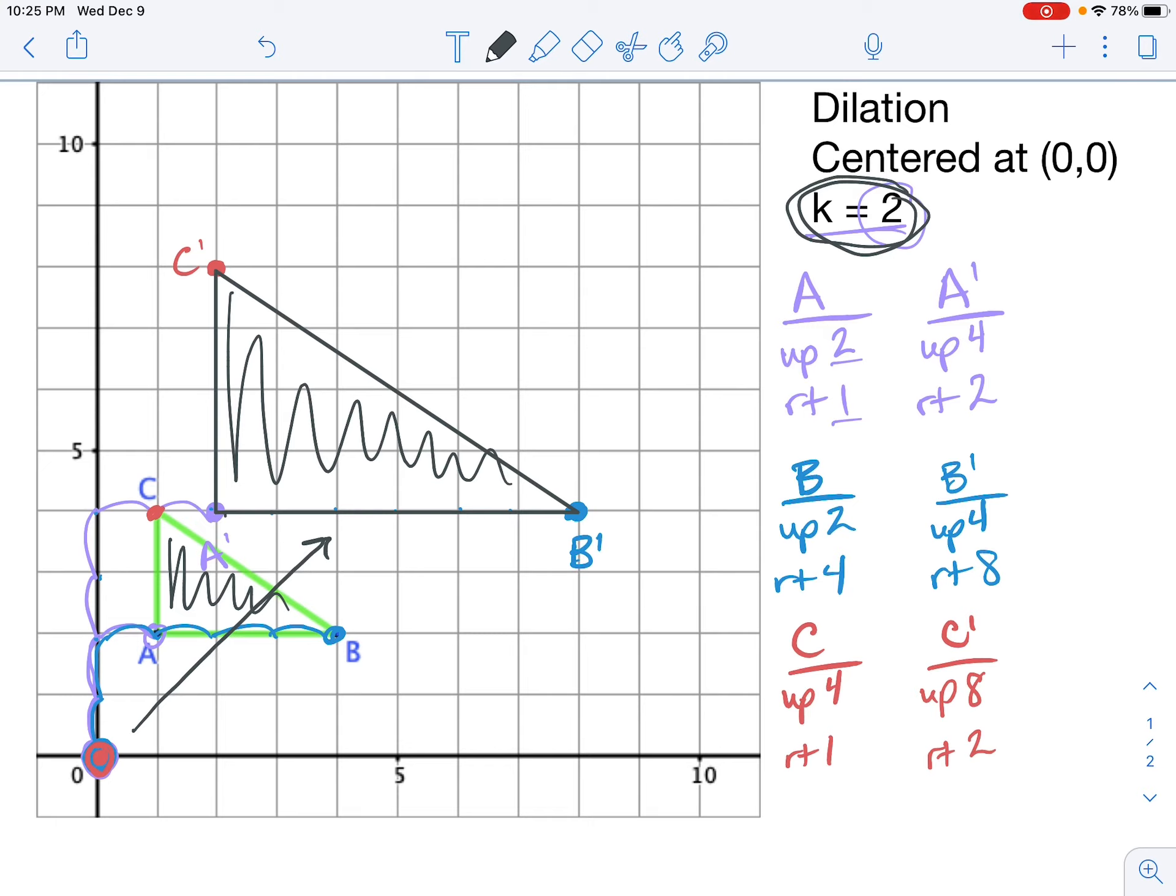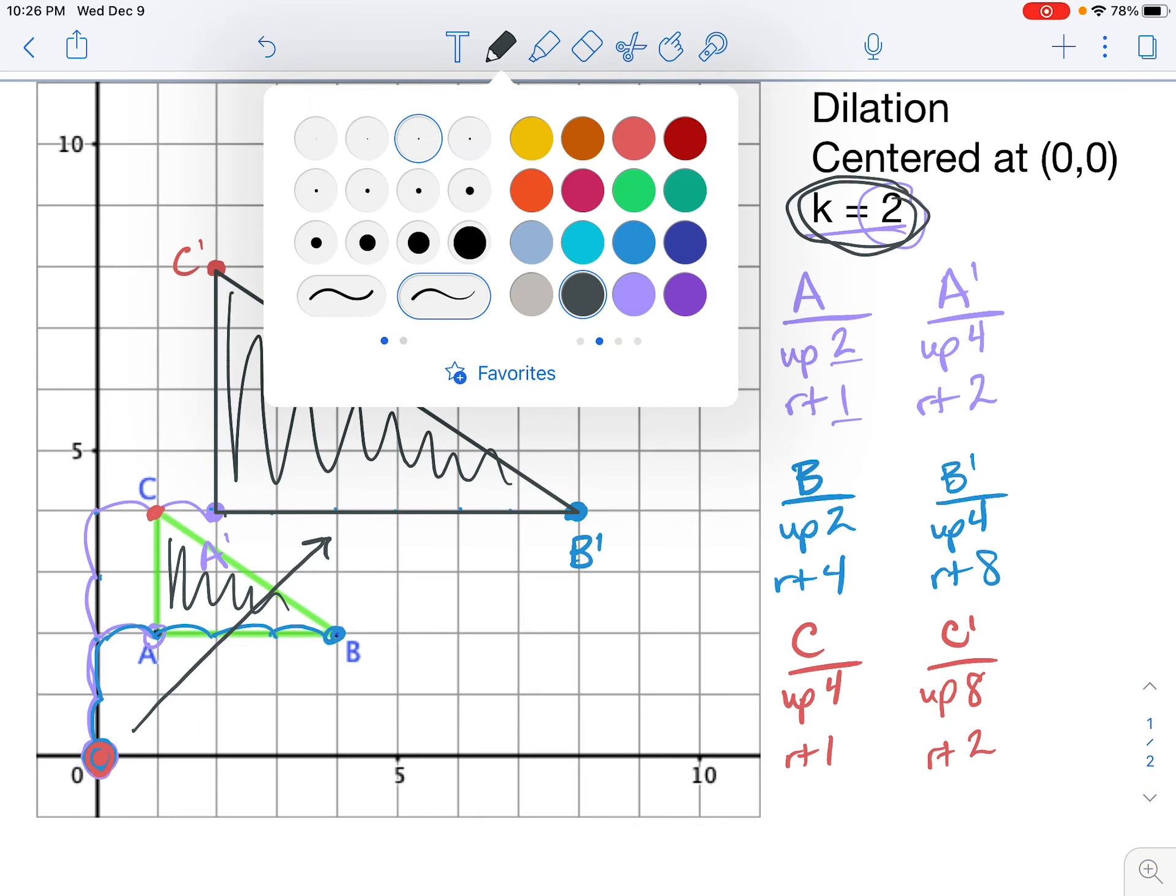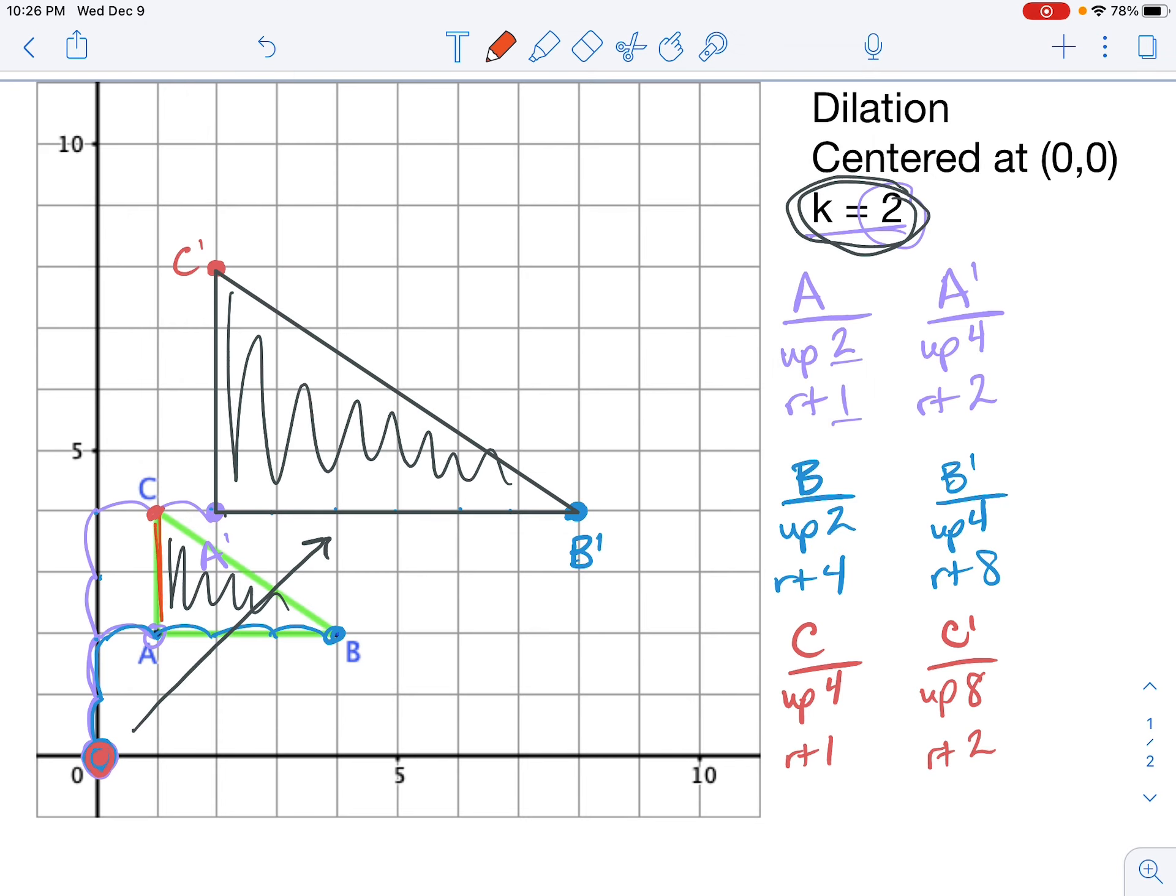There are some other things that I can check as well. When we do a dilation, the size is changing, so the image and the pre-image are not congruent to each other, but they are similar. We should still have the same general shape here. I started with one vertical side and one horizontal side. In my new triangle, I also have one vertical side and one horizontal side. I had a right angle here at A. A prime is also a right angle. So I'm still maintaining the same shape, even though the size has gotten larger.